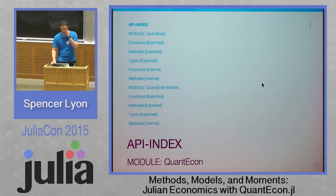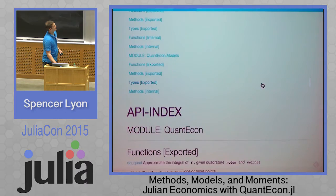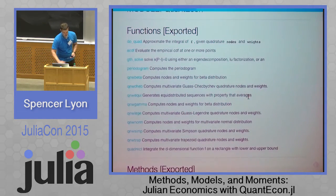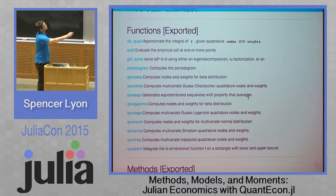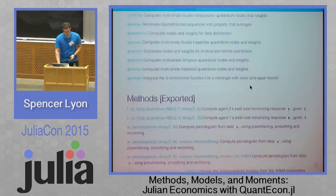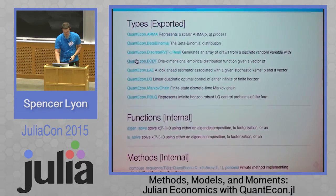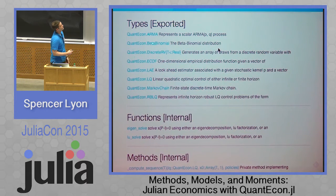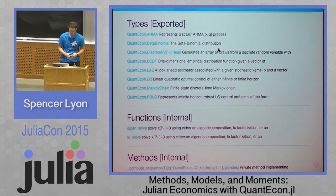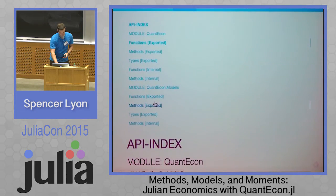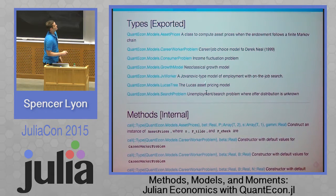Here's an overview of what the library provides. We have a collection of functions for getting quadrature nodes and weights for different quadrature schemes, as well as evaluating approximate integrals using those schemes. The type section includes basic statistical tools, types to represent autoregressive moving average models, various distributions not available in the distributions package, linear quadratic control problems and a robust version, and a toolset for analyzing discrete state Markov chains. In addition, we have a growing collection of classic economics models that we've implemented and provided solutions for.